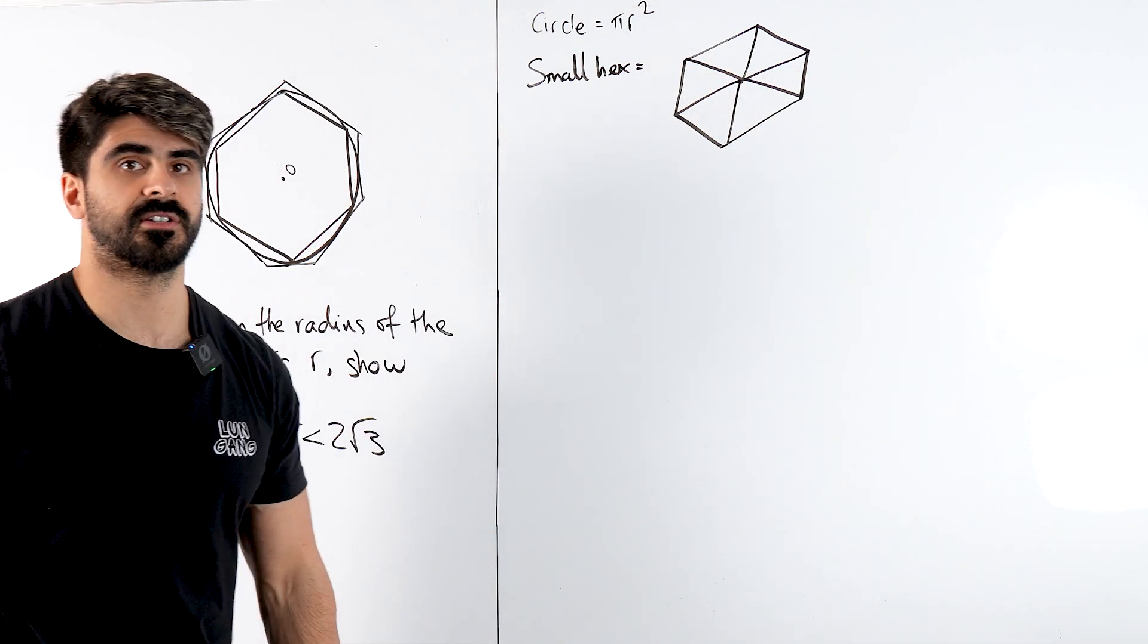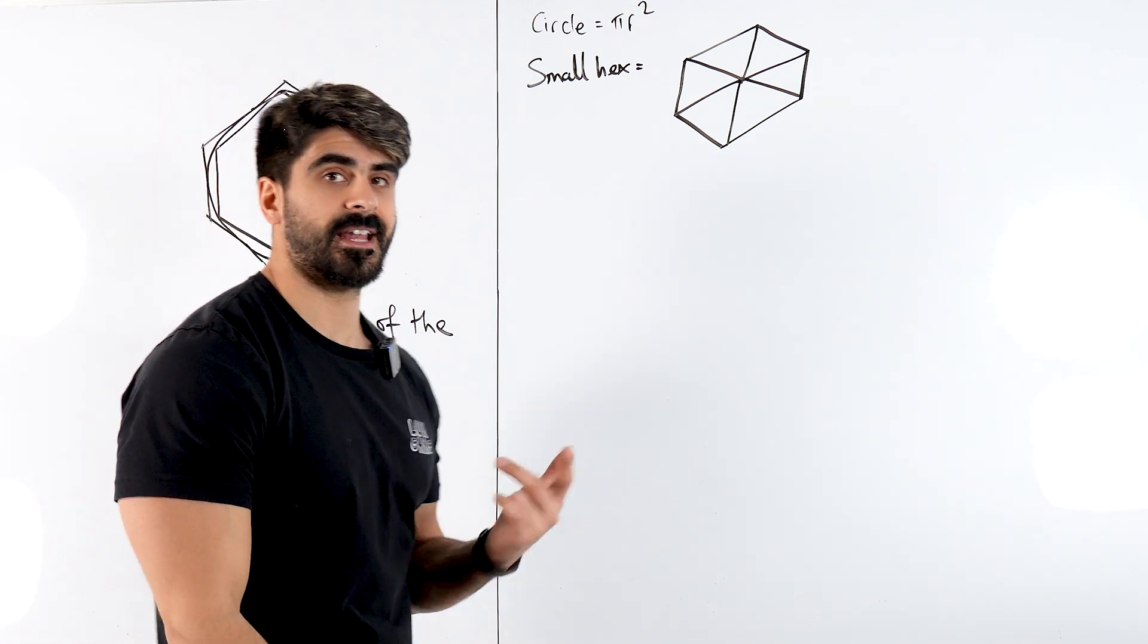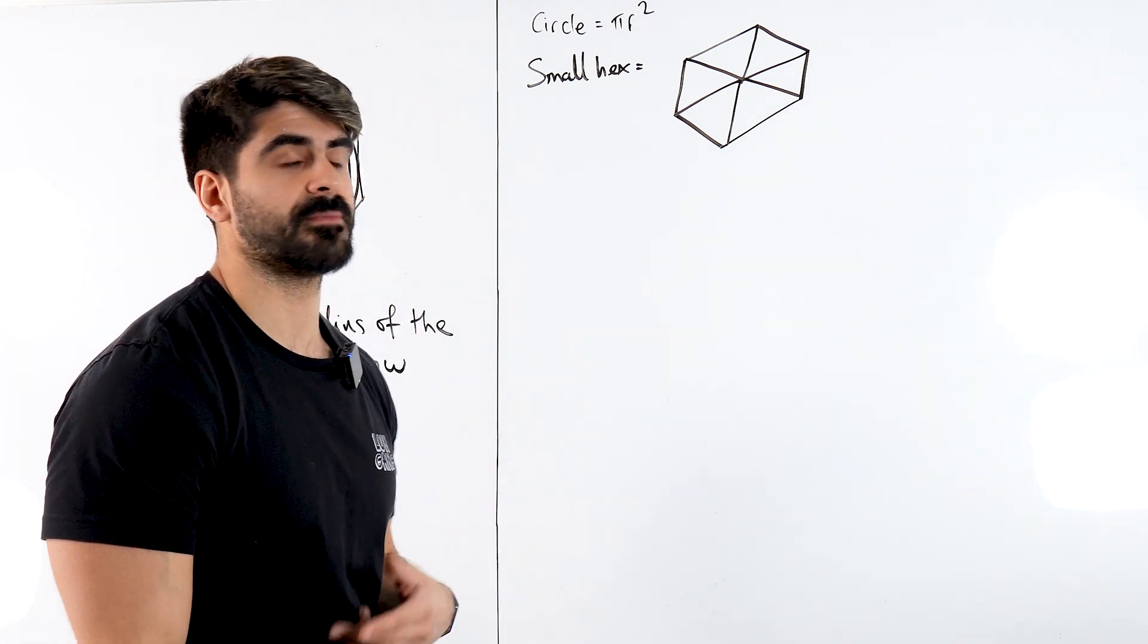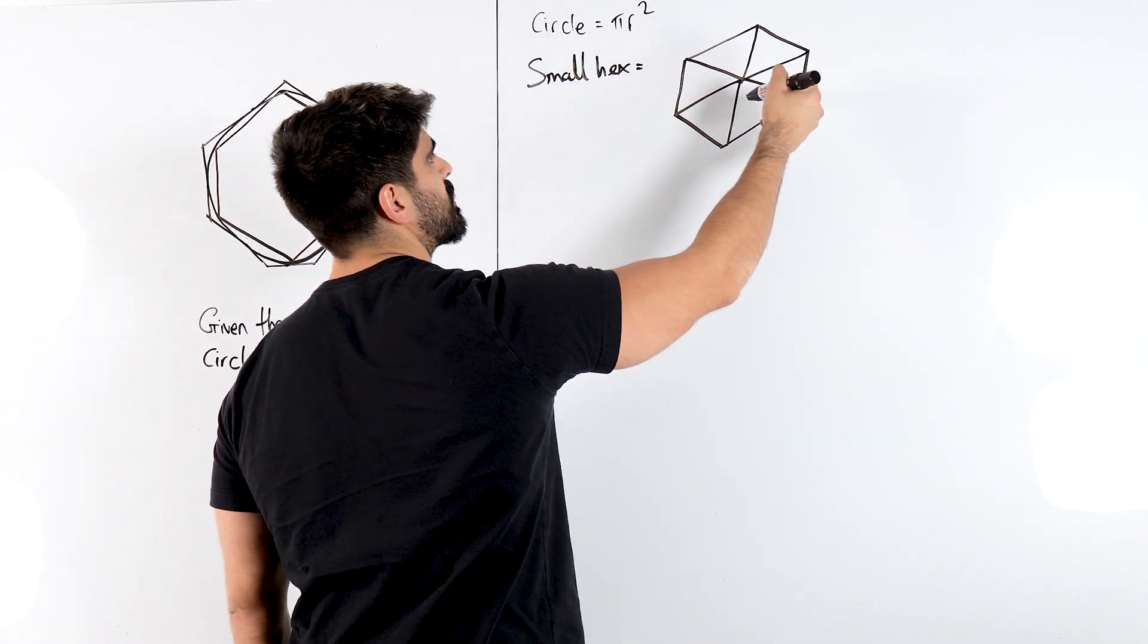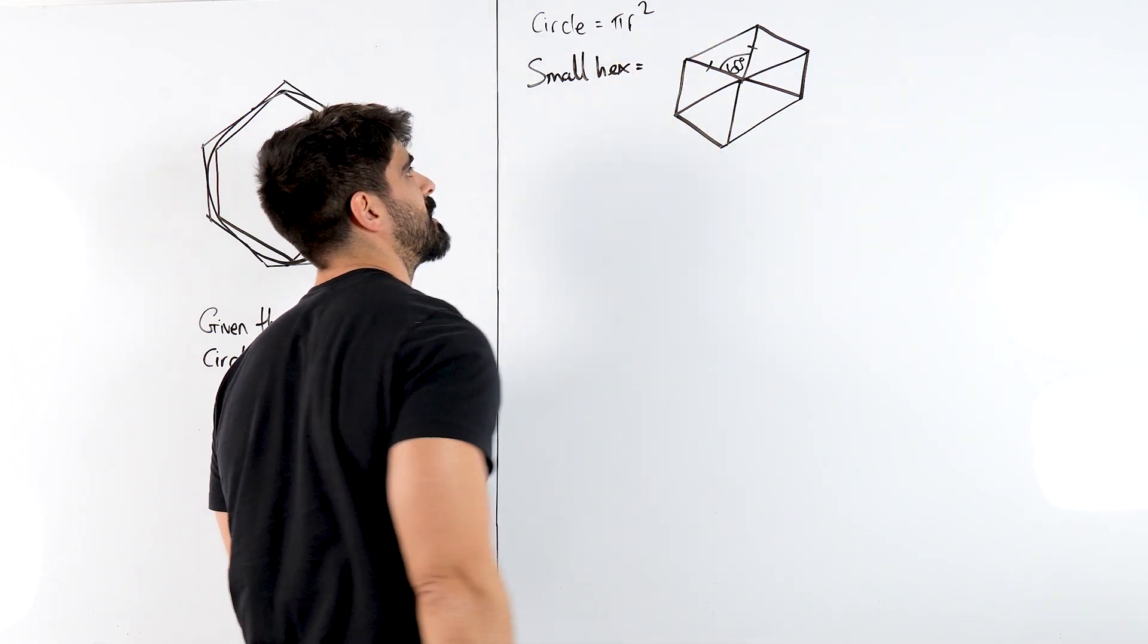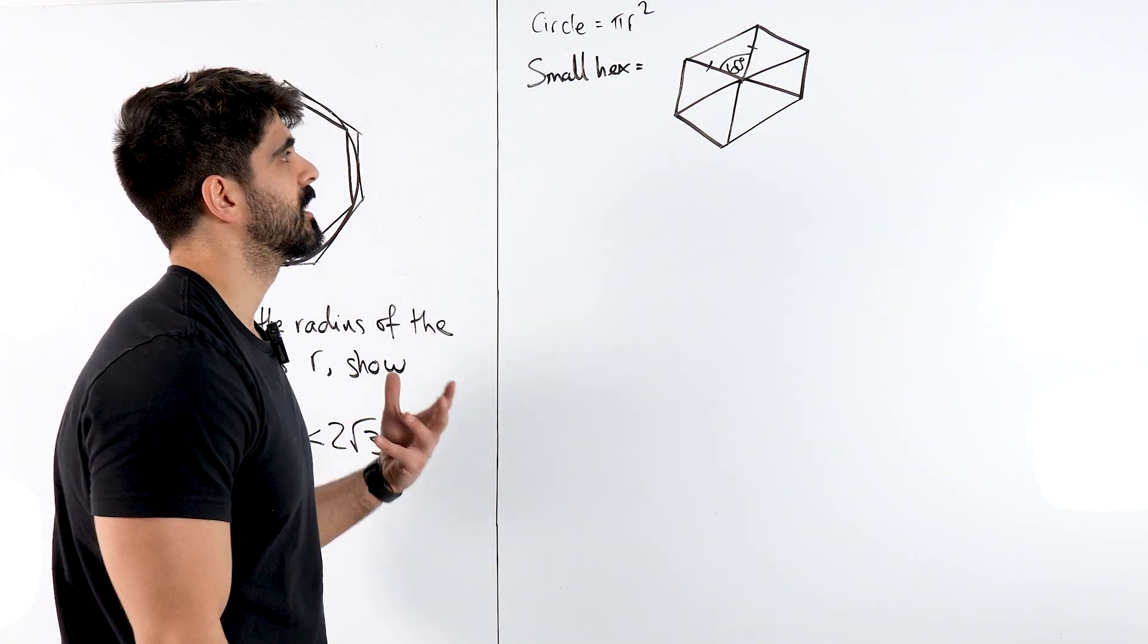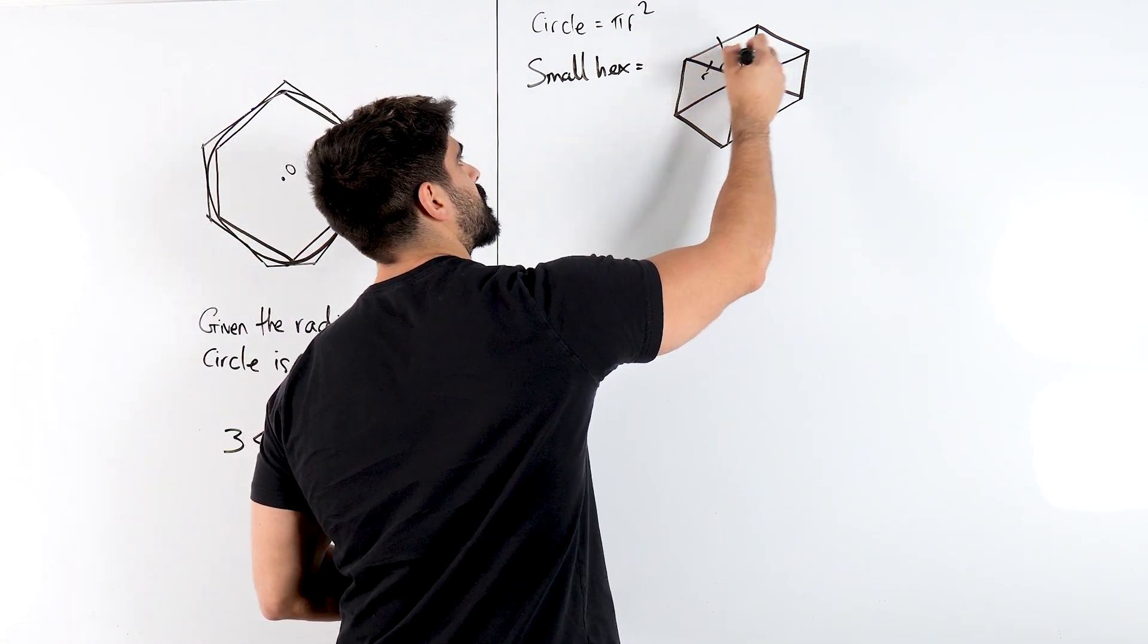Because the thing about a regular hexagon is it's just a bunch of isosceles triangles. But with a regular hexagon it's actually even better, it's a bunch of equilateral triangles. Because you have six regions here, you have 360 so each of these are 60 degrees with both of these being the same length. So it has to be an equilateral triangle. So all these are the same, they're all r.